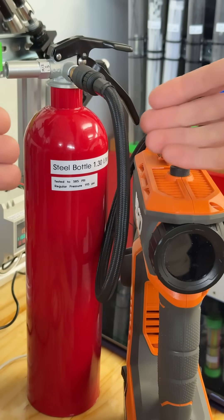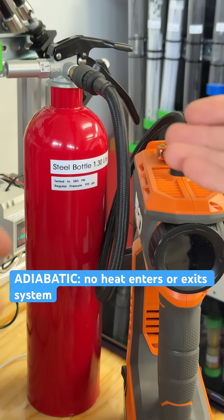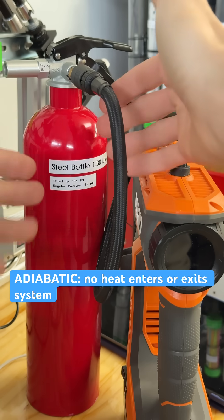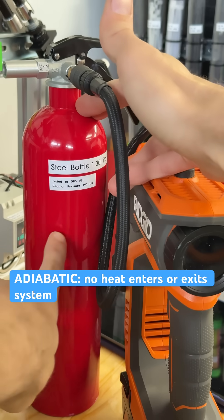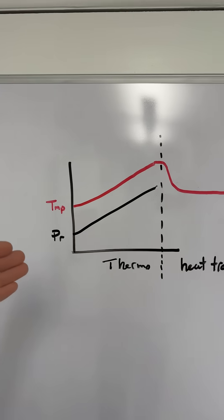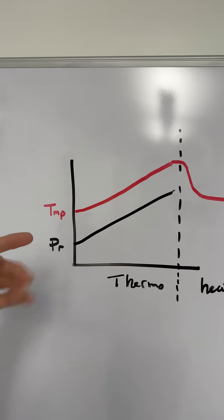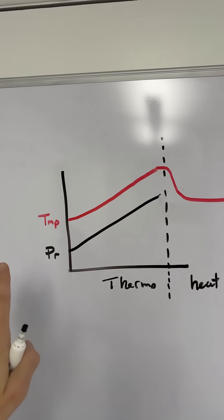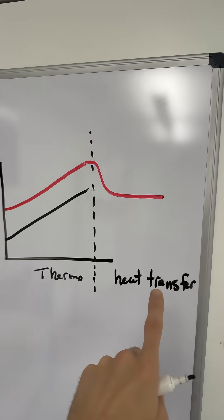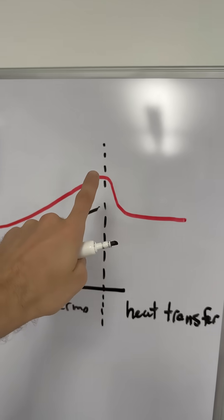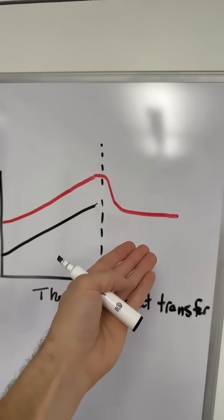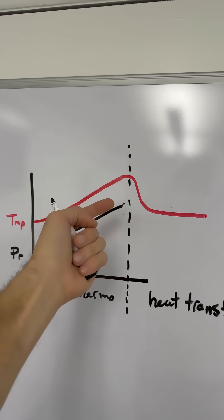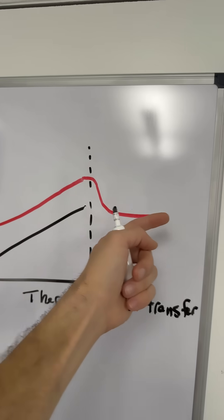In thermodynamics we evaluate some idealized scenarios like moving pressure into here with an adiabatic compression, which means the heat is not escaping from the bottle. So in thermodynamics we can compute ideal situations where energy is moved into a system and that's the whole story. But then heat transfer gets involved and we actually have heat loss in the real world, where some of that heat energy moves back out of the bottle to come back to ambient conditions.